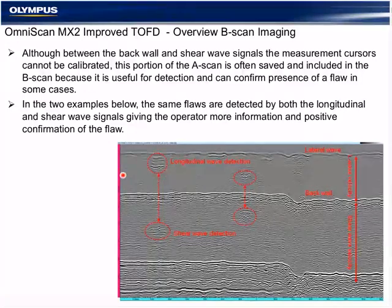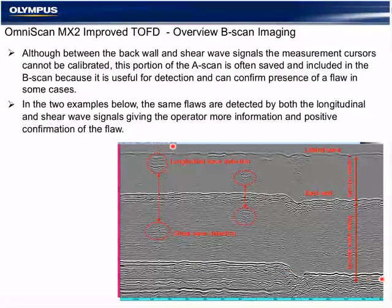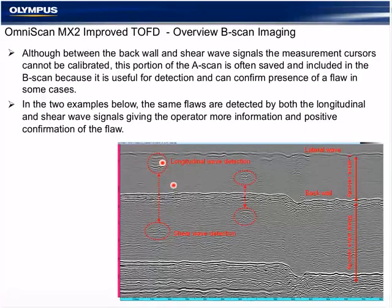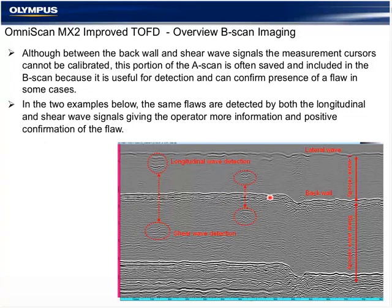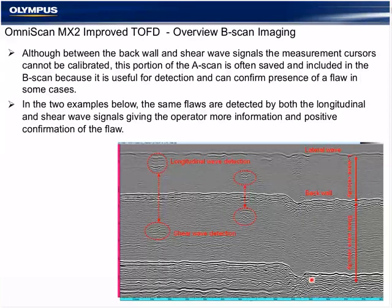The B-scan imaging may or may not include the shear wave mode-converted signal. Here we see the lateral wave, and a defect detected both in the L-wave and the mode-converted shear wave. Our ability to measure in the shear wave area is limited, but it's useful in identifying defects. We also see a change in thickness during the inspection where the range was set to include the full mode-converted shear wave.